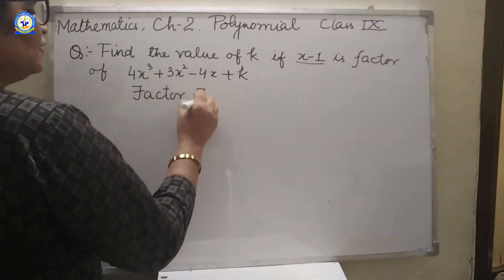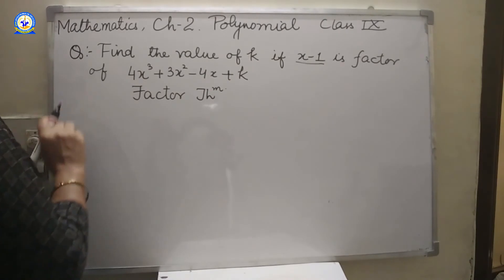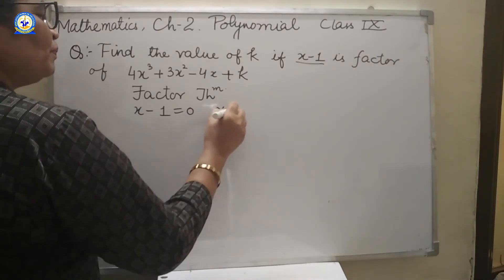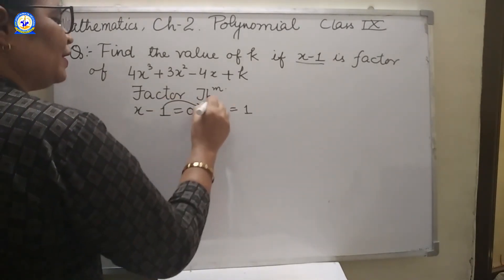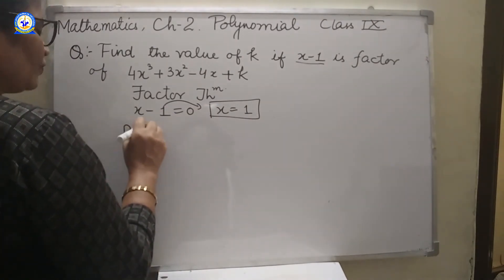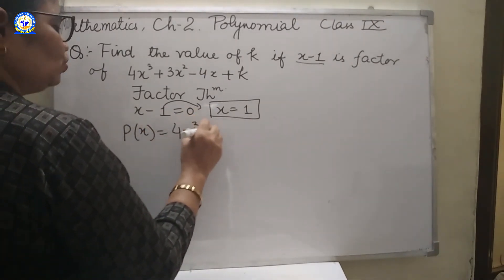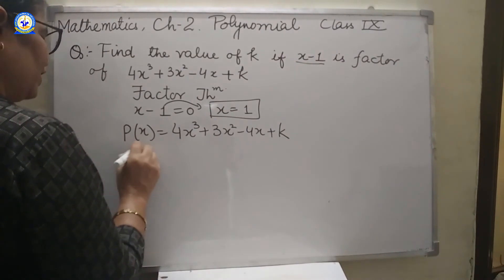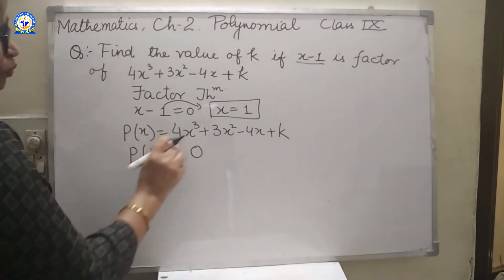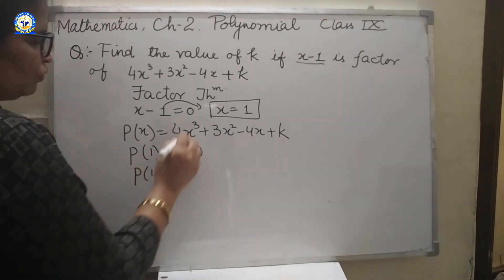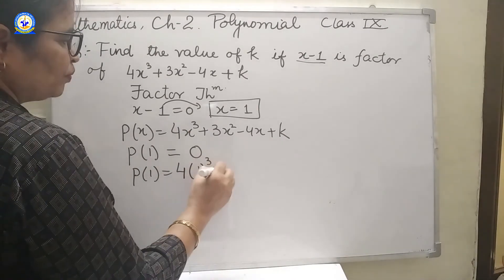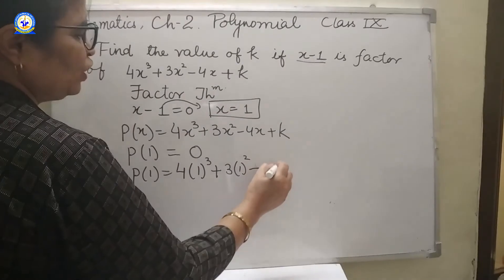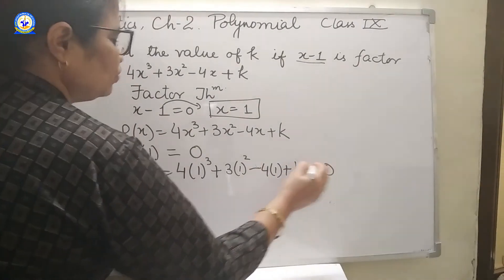If we will apply factor theorem, then x minus 1 will be the factor. That means by putting x equal to 1, this Px at this value becomes 0. That means P1 will be 0. Now putting this value in that, P1 is 4 into 1 cube plus 3 into 1 square minus 4 into 1 plus k equal to 0.